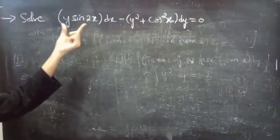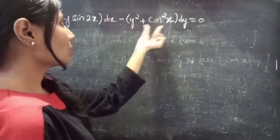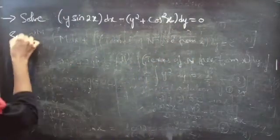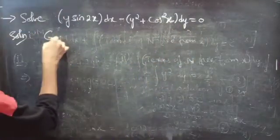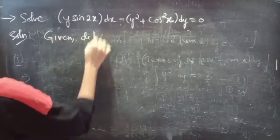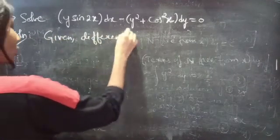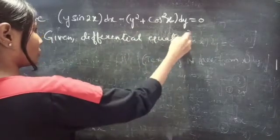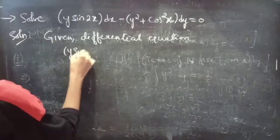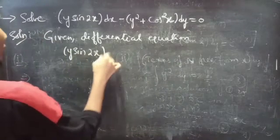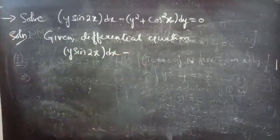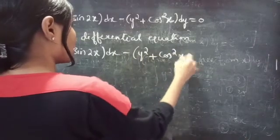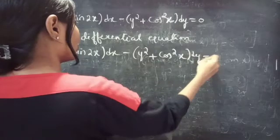Problem to solve: y sin 2x dx minus (y squared plus cos squared x) dy equals 0. This is the given differential equation.